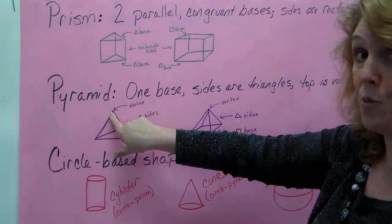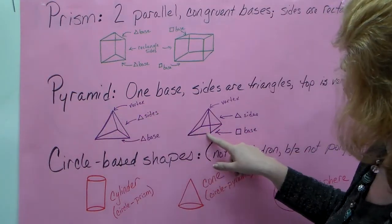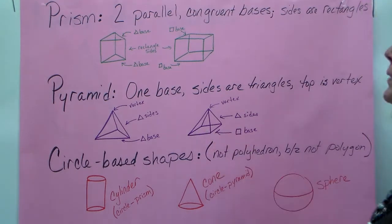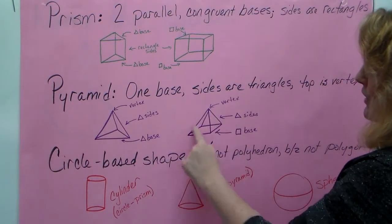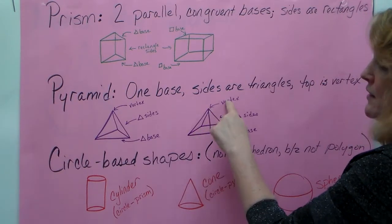It comes to a vertex point. Here I have a rectangular pyramid. Because the base is a rectangle, the sides are triangles, they all come up to one point. That's the vertex.